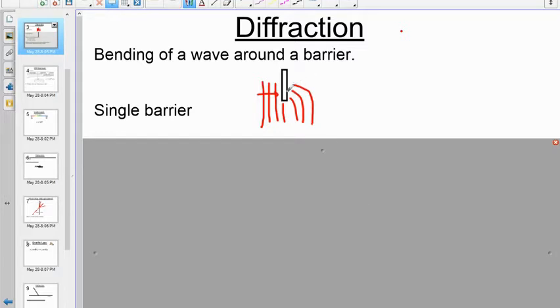So you would get wave back where you wouldn't think you normally would have it. If this were particles, the particles would travel by and you would not get any activity back here. But waves bend around barriers.